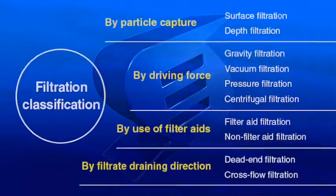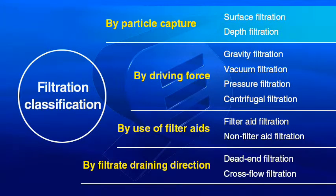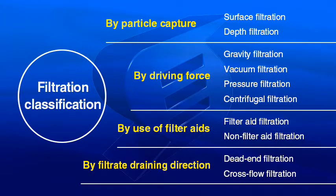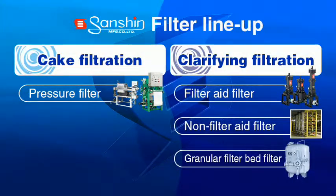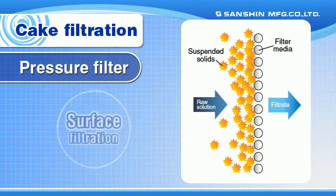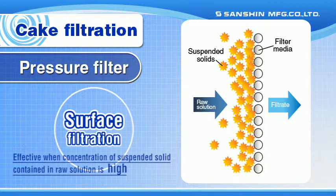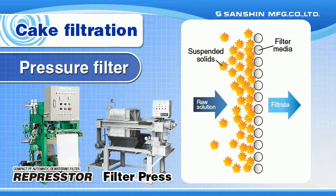There are a variety of filtering classification methods, including particle capture, driving force, use of filter aids, and filtrate draining direction. I would now like to introduce Sanxin products by dividing them into cake filtration and clarifying filtration, based on the concentration of suspended solid contained in raw solution. With cake filtration, surface filtration in which particles are trapped with a filter medium surface progresses; a cake layer forms on the filter medium surface and particles are trapped with this cake layer. It is particularly effective when the concentration of suspended solid is high. We offer the repressor and filter press pressure filters.